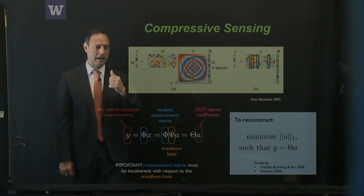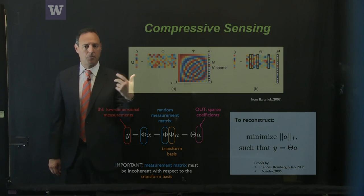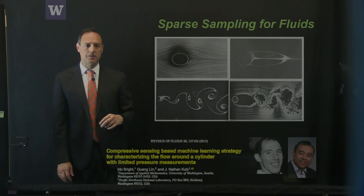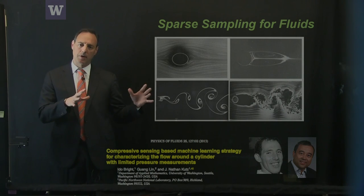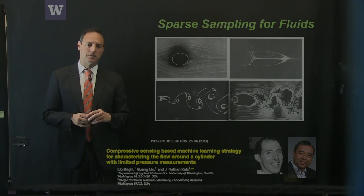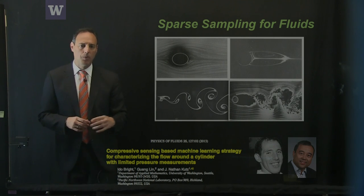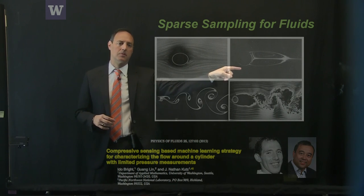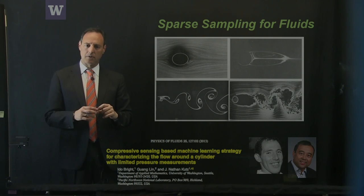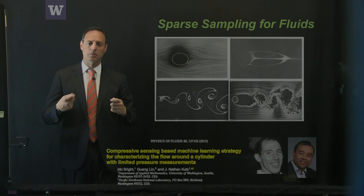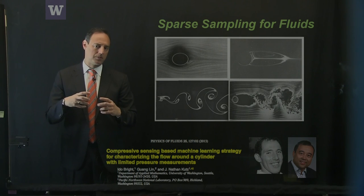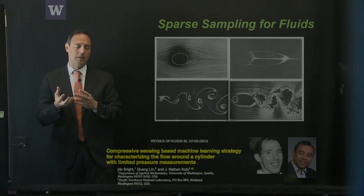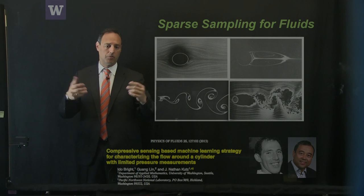Compressive sensing has gained traction in signal processing, image reconstruction, and medical imaging. We use this idea for sparse sampling for fluids — work with Ido Bright and Guanglin — thinking about how to use this architecture with a small number of samples around a cylinder. The tasks are: take a small number of pressure measurements on the cylinder, identify the Reynolds number, reconstruct the pressure field, and give future state prediction.